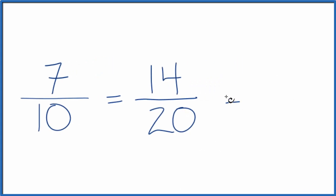Let's do another one. Instead of multiplying the numerator and denominator by 2, let's multiply them by 3. 7 times 3 is 21. 10 times 3 is 30. That's another equivalent fraction for 7 tenths.